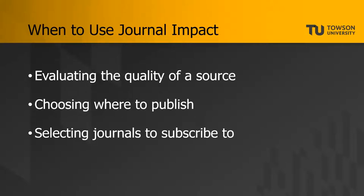Finally, journal impact is used by libraries for making decisions about their collections. Journal and database subscriptions are extremely expensive — the Cook Library spends almost a million dollars on them each year. No library can afford to subscribe to every academic journal, so journal impact metrics can help librarians make decisions about which journals to include in their collections.